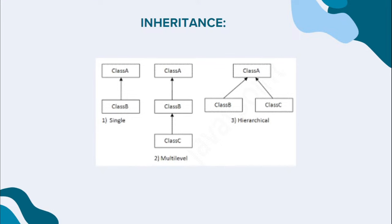Multi-level inheritance occurs whenever a chain or sequence of inheritance happens — for example, class B inherits class A, and class C inherits class B. Hierarchical inheritance is when more than one child class inherits the property of a single parent class. These are the three types: single, multi-level, and hierarchical inheritance.